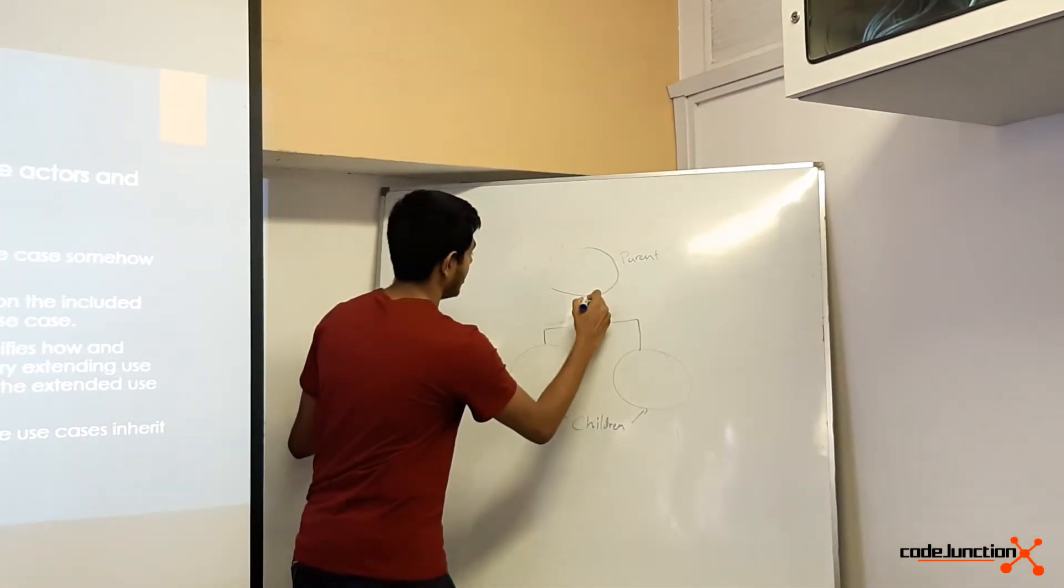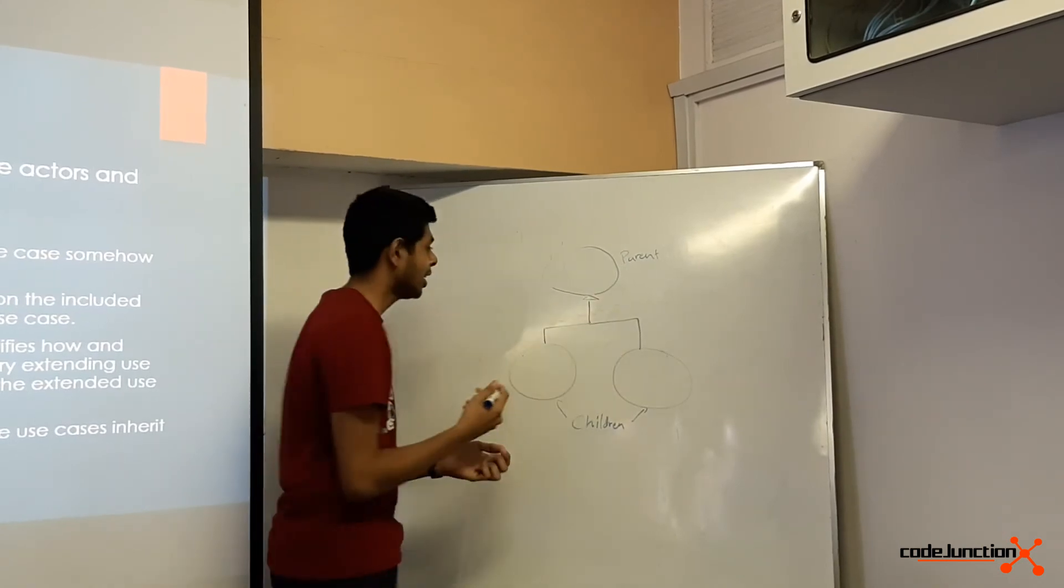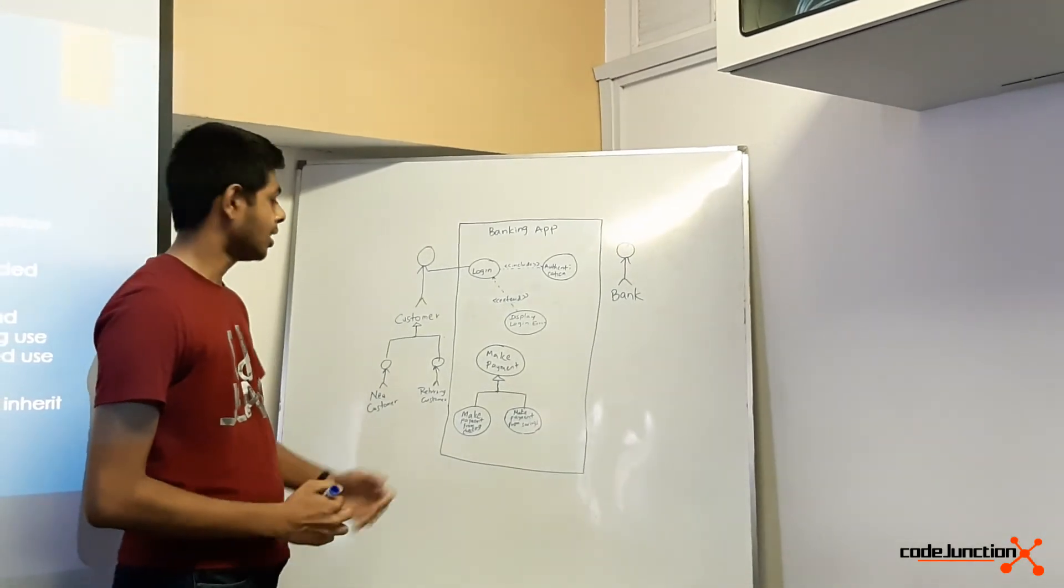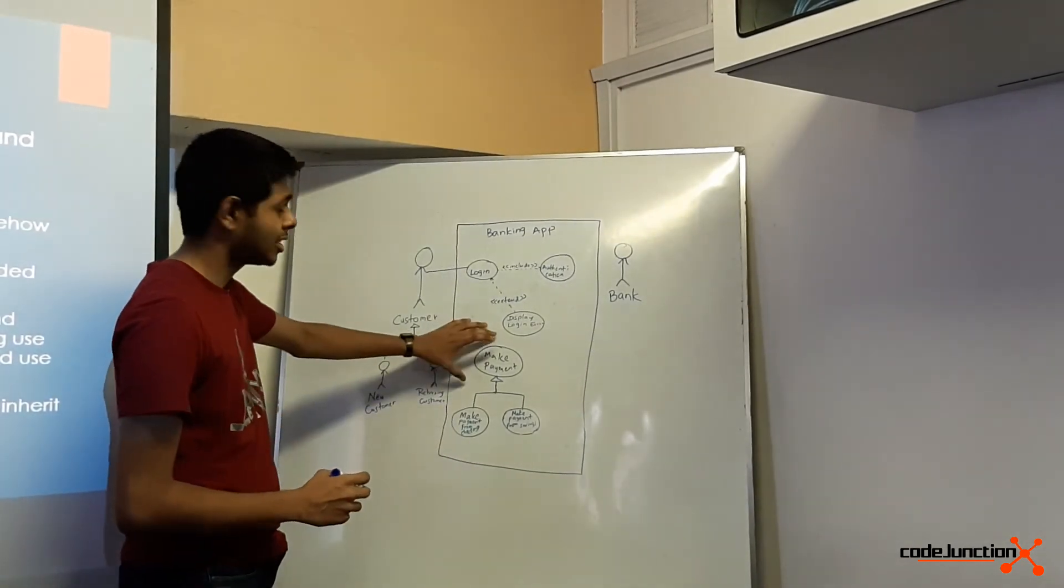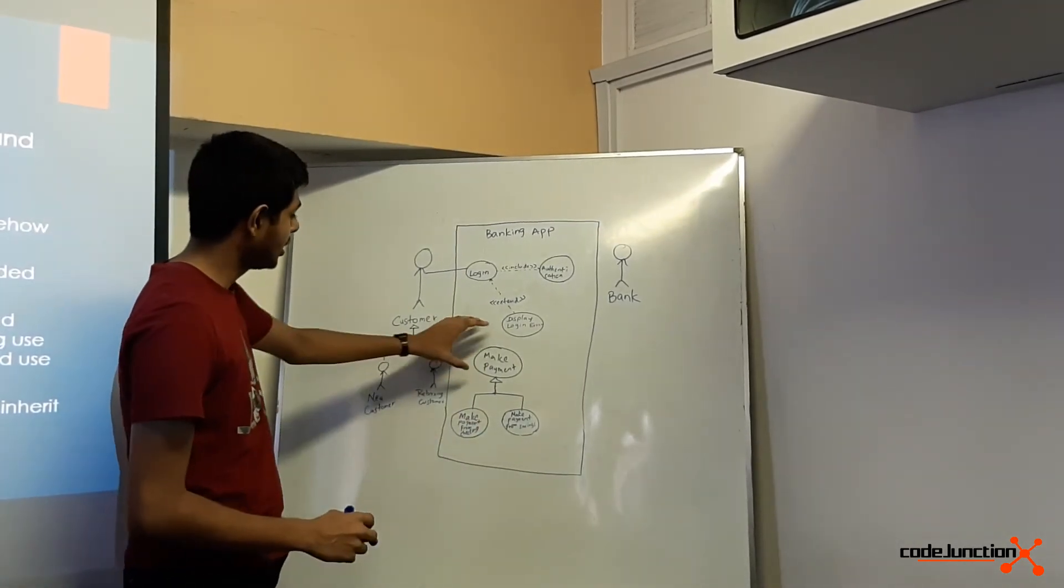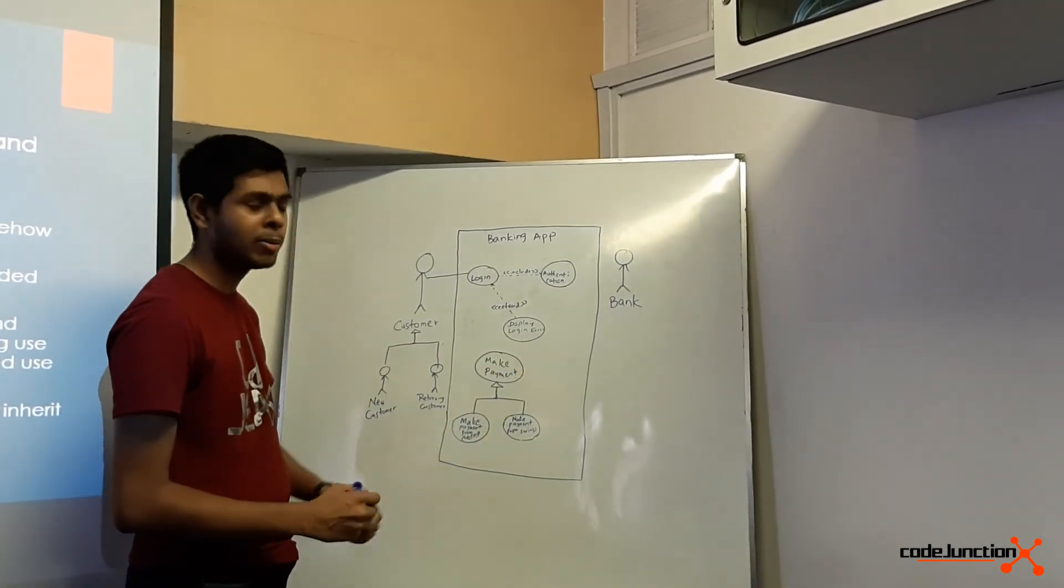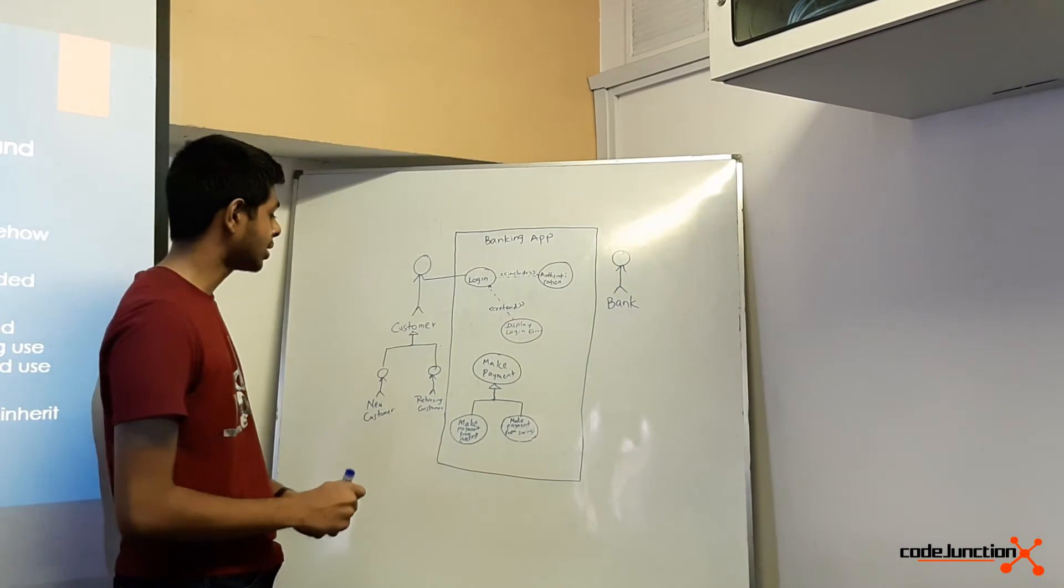In this example, this is a representation of generalization of use cases. Here, make payment is the parent use case, and make payment from checking and make payment from savings are the child use cases.